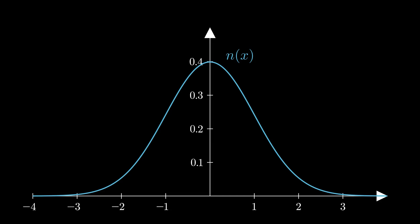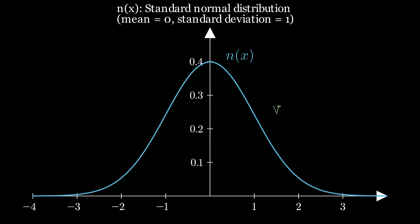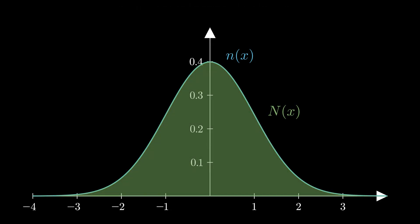Lowercase n(x) is the standard normal distribution — a bell-shaped curve with a mean of 0 and a standard deviation of 1. The total area under the curve equals 1, representing 100% of all possible occurrences. Uppercase N(x) is the cumulative normal distribution function; it calculates the probability of occurrences less than a given x value by measuring the area under the curve from negative infinity to x. For example, N(positive infinity) equals 1, because it includes all possible occurrences.